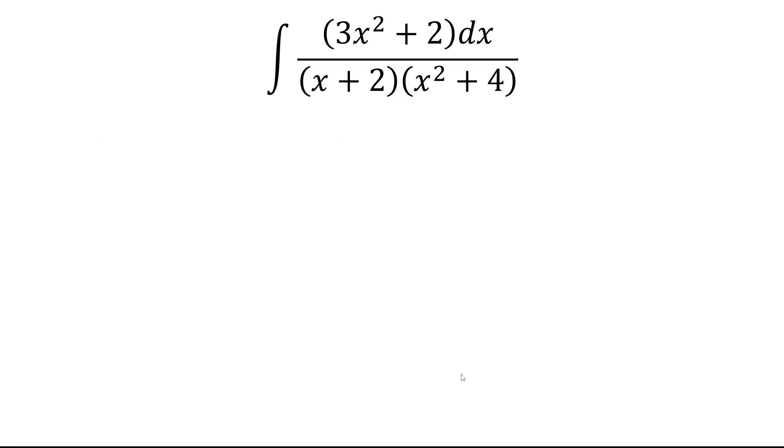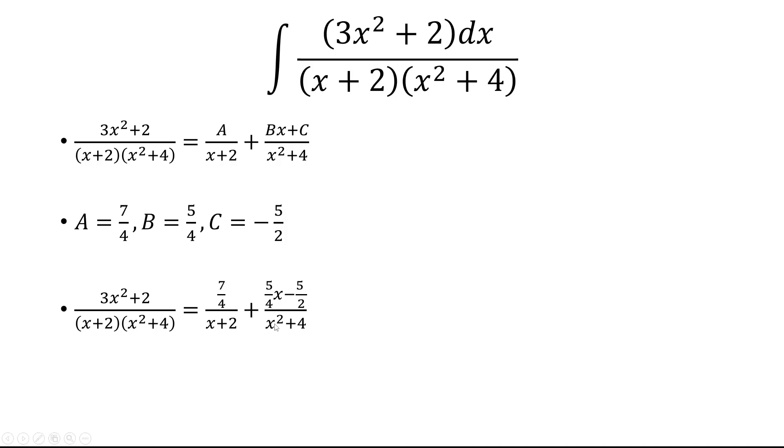So now we have A, B, and C, and we just need to plug it back in. So A we set as 7 fourths, B is 5 fourths, and C is negative 5 halves. So instead of integrating the left, we're going to integrate the right.